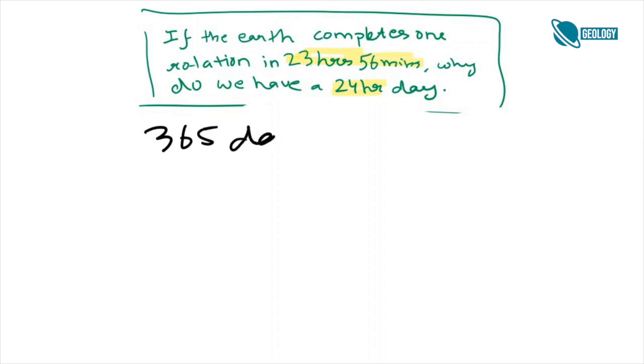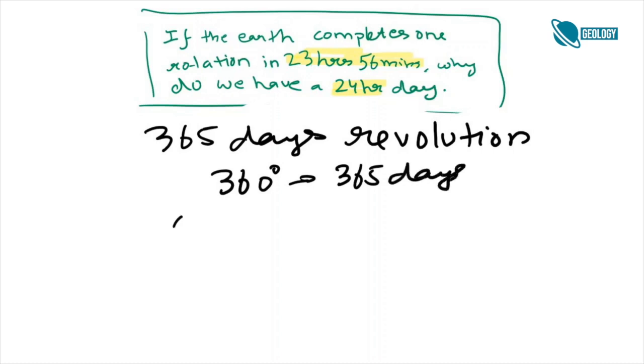Well how much? Earth takes 365 days to complete a 360 degree revolution around the sun. So per day, it's around about 1 degree.